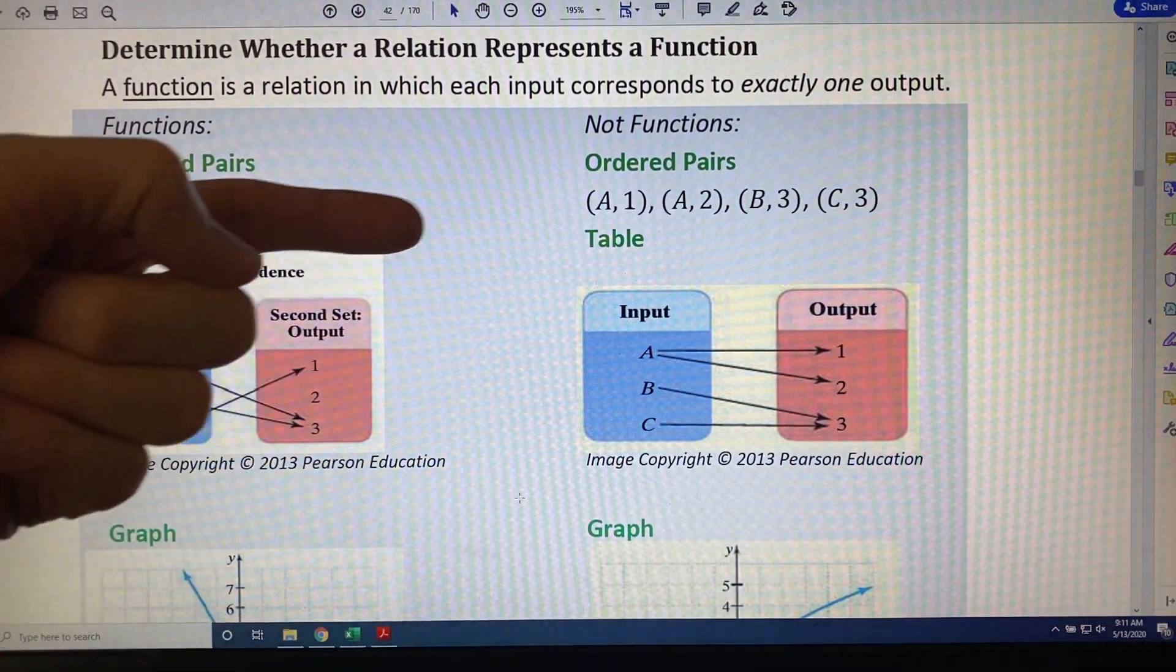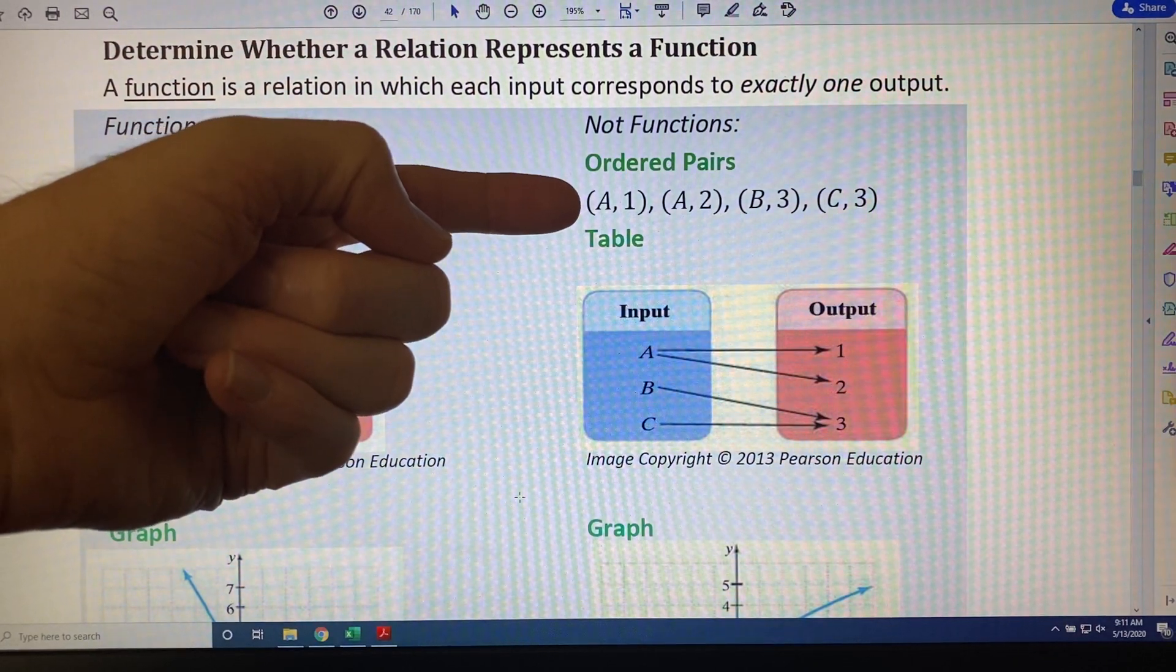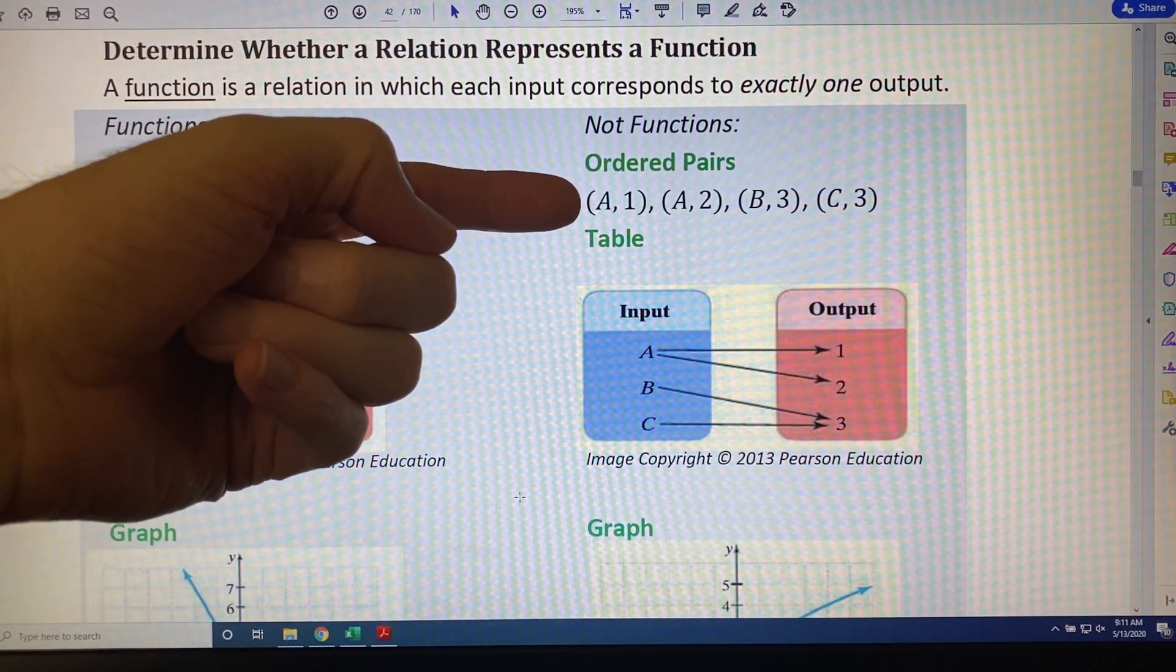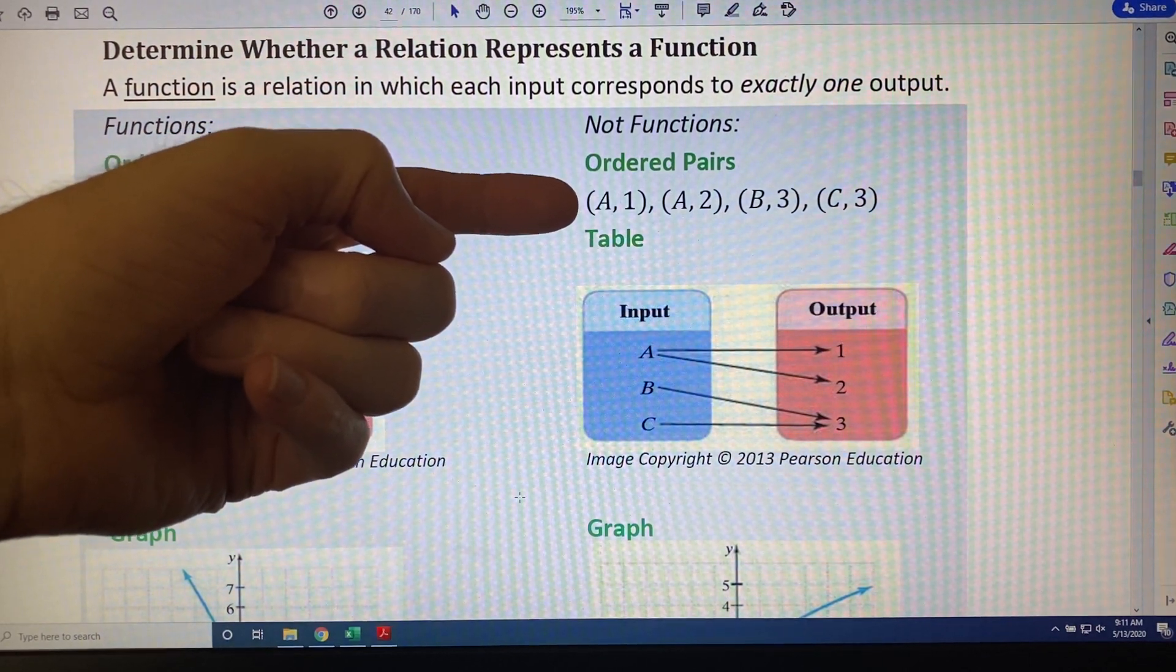So let's look at these ordered pairs. We've got capital A leads to 1, capital A leads to 2, capital B leads to 3, and capital C leads to 3.